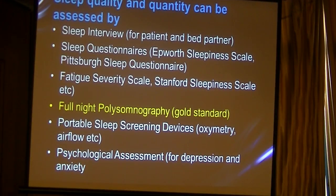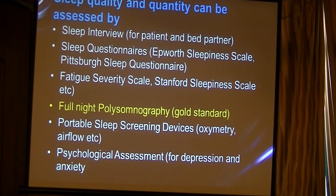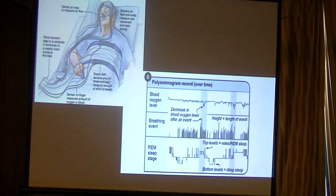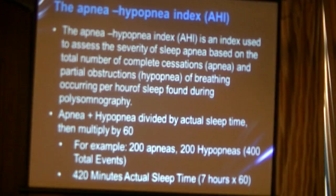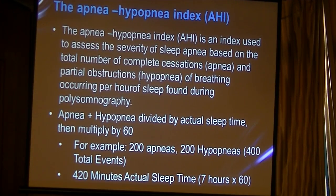Sleep quality and quantity can be assessed by a sleep interview with the patient and bed partner, sleep questionnaires, the fatigue severity scale, the Epworth Sleepiness Scale, and the gold standard — full-night polysomnography — along with wrist-worn devices and scales for depression and anxiety. The polysomnograph tests blood oxygen levels, sleep stages, number of awakenings, and correlates all data to produce the apnea-hypopnea index (AHI): the number of apnea episodes plus hypopnea episodes divided by the actual hours of sleep, then multiplied by 60. AHI less than 5 is normal, 5–10 is mild, 10–15 is moderate, and more than 15 is severe sleep apnea.